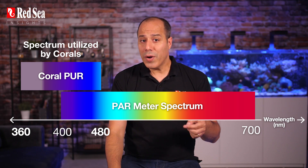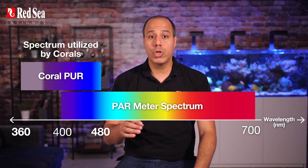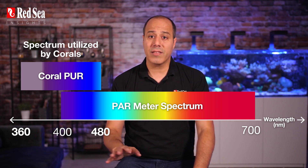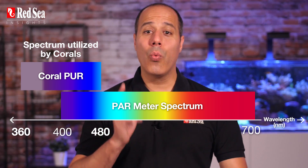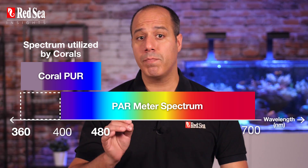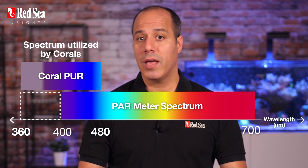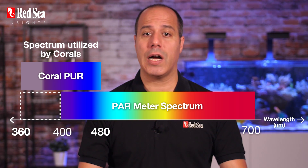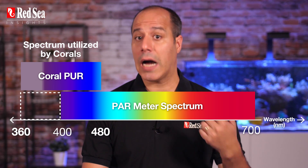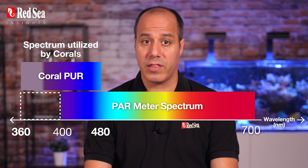So you can already see that using power measurements to determine the suitability of light for corals doesn't tell us the whole story. On the one hand, the power measurement is missing an important part at the bottom end of the spectrum. These wavelengths in the UV range below 400 nanometers enhance coral growth and color expression, and stimulate the auto recovery process of photosynthesis.